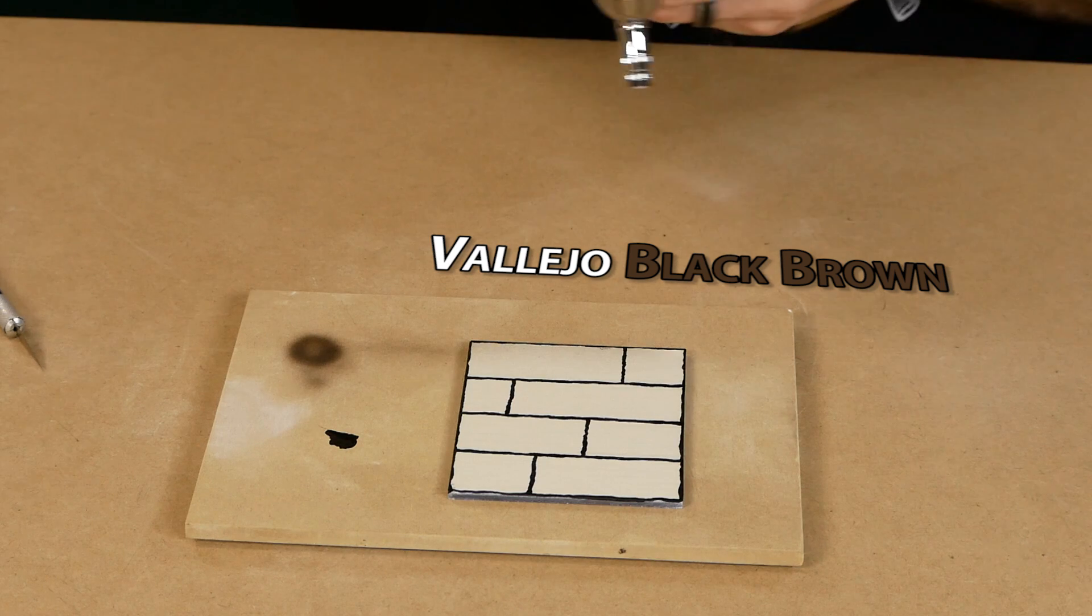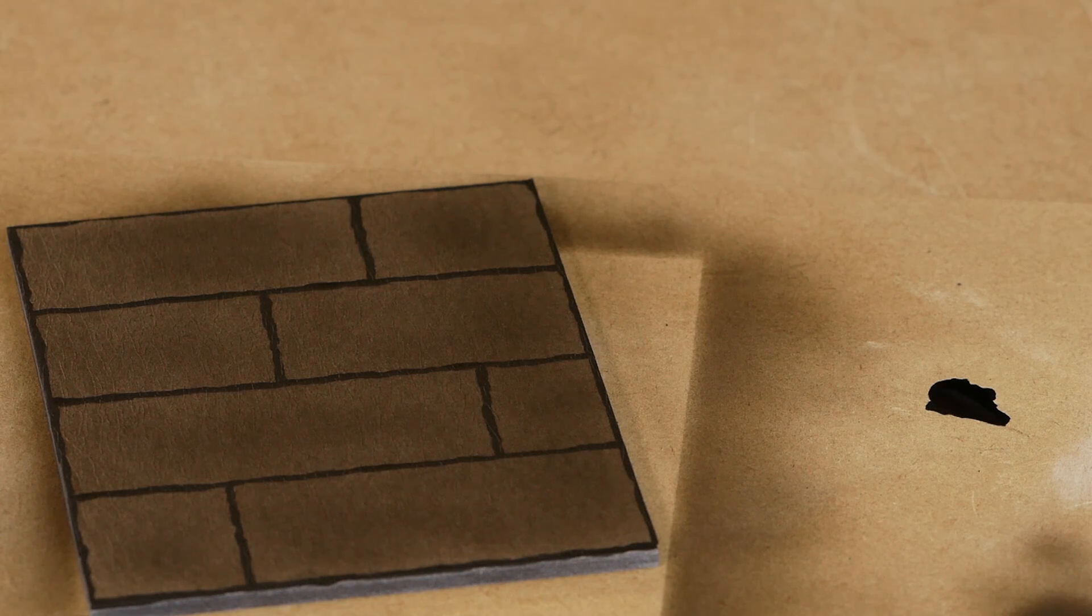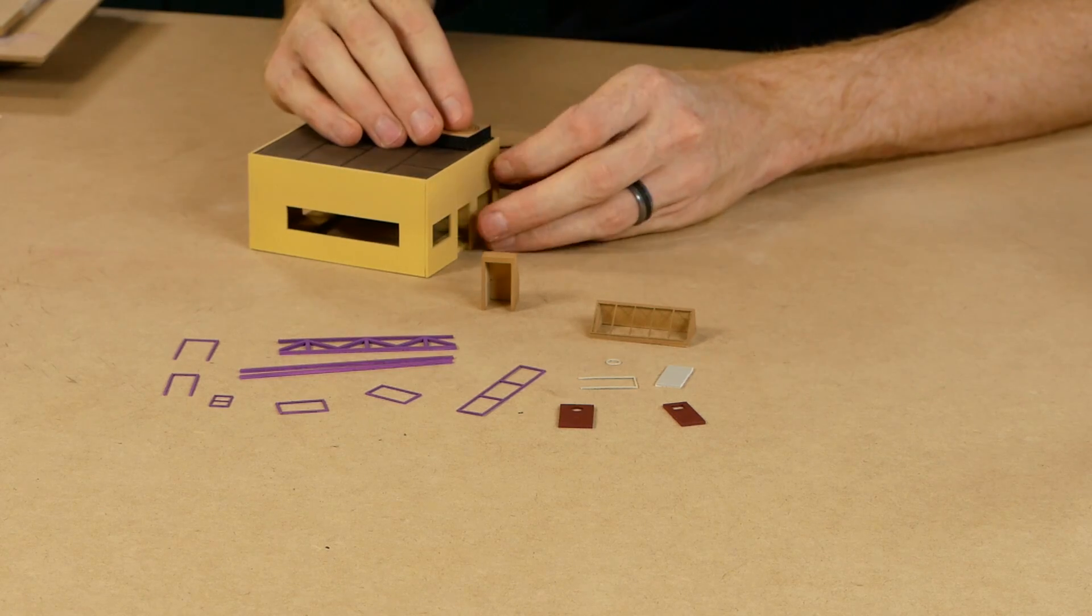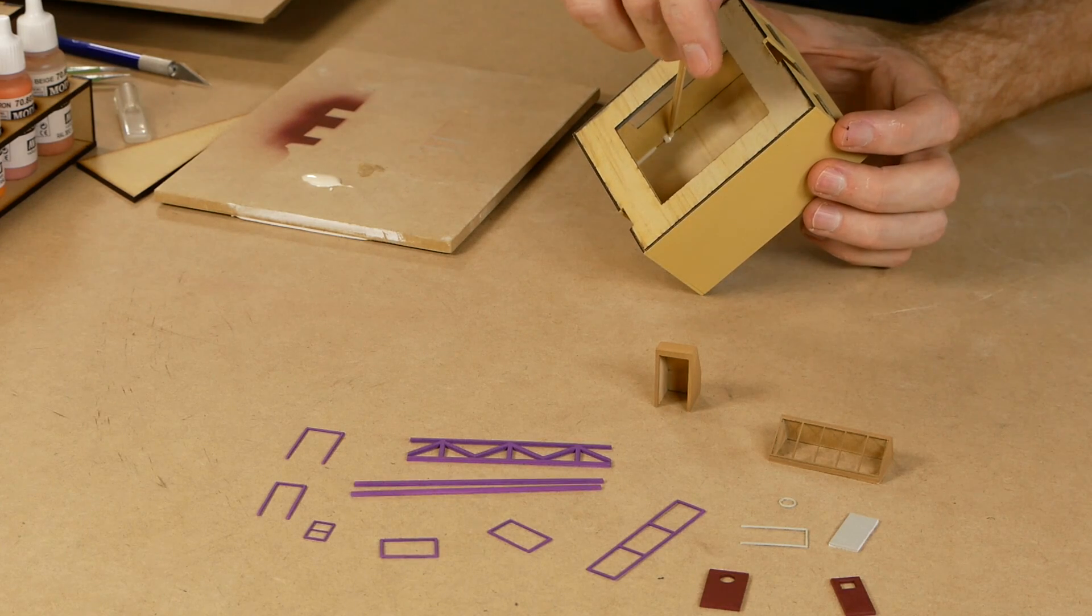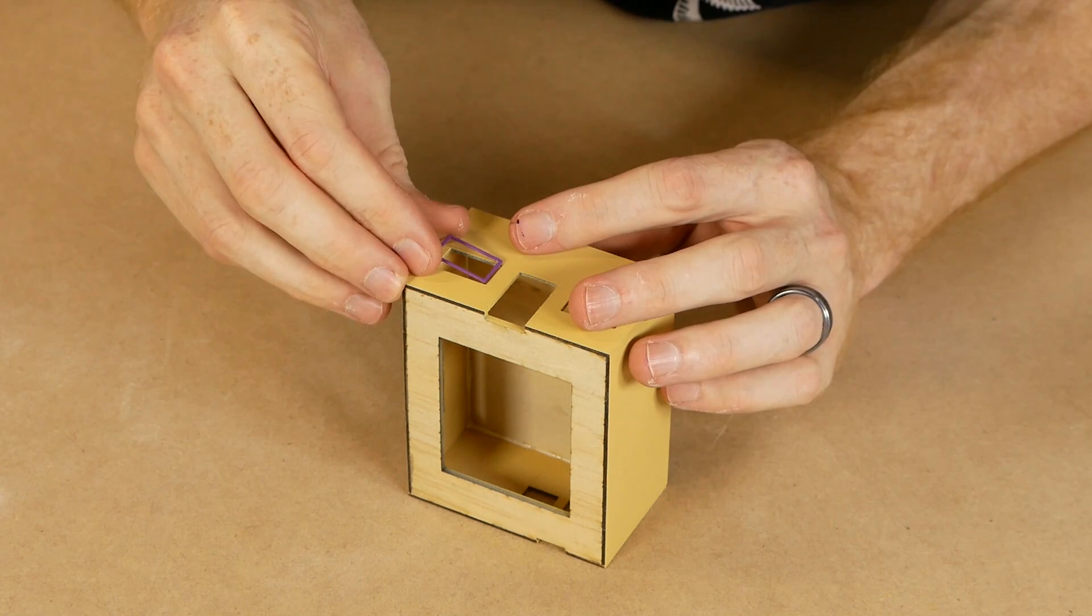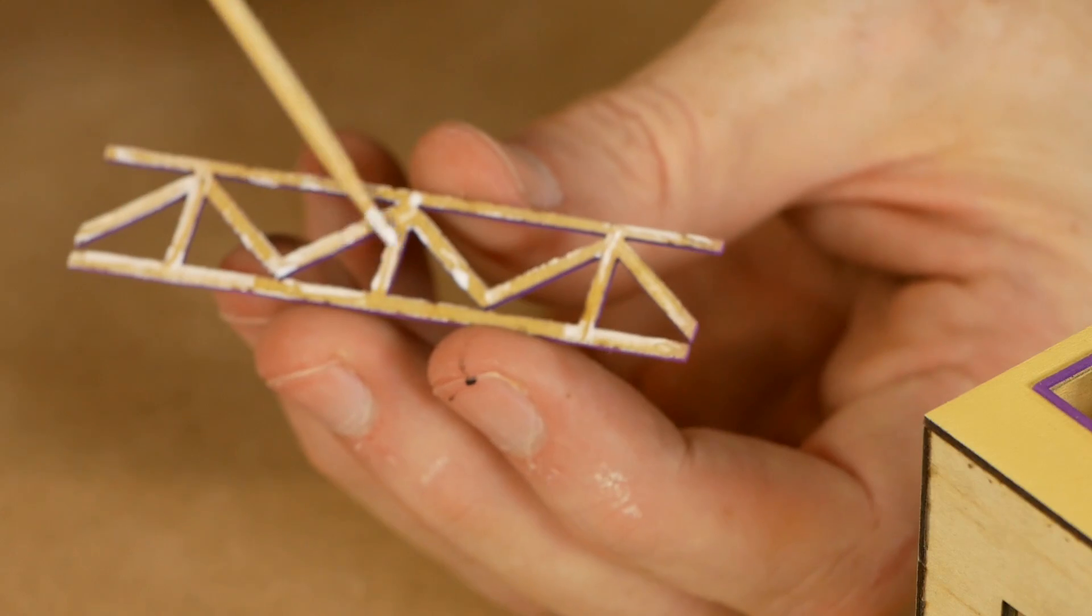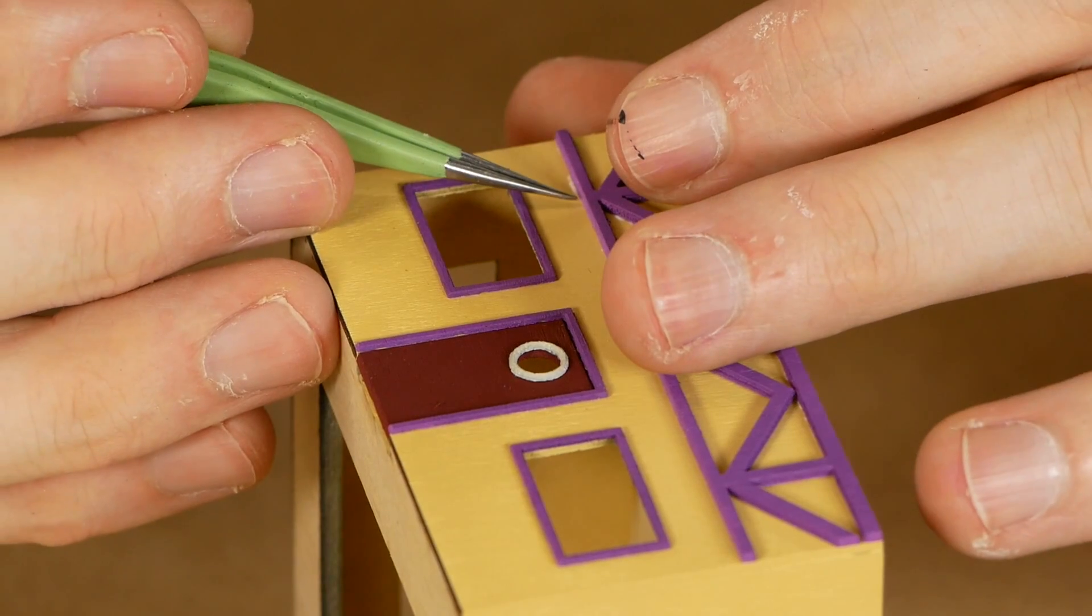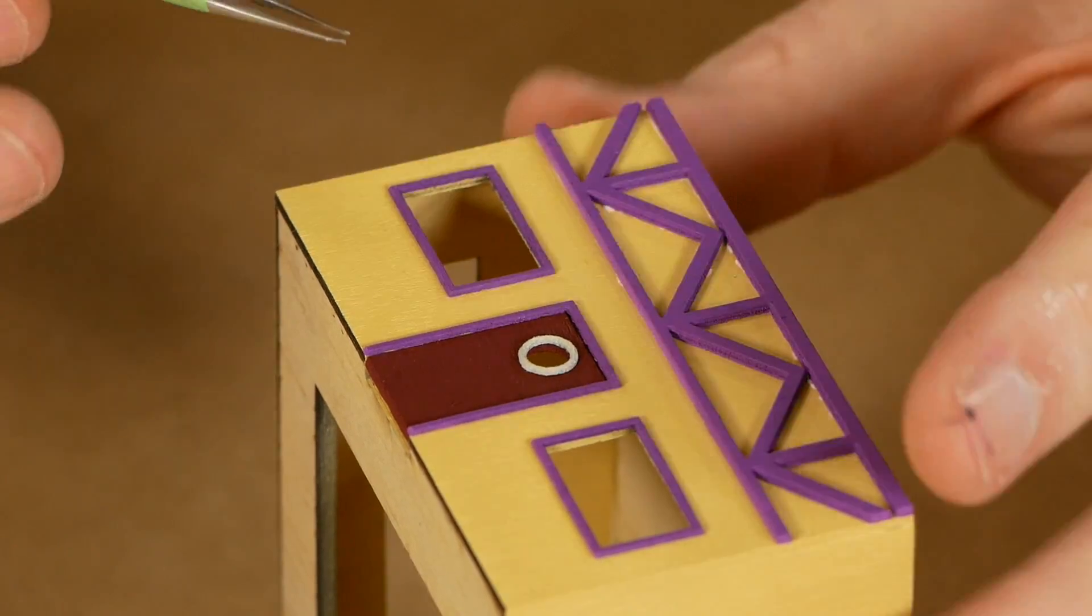Now that everything's painted I can start gluing it together. The roof is pressed down and I used a three millimeter thick piece of MDF as a guide for depth and glue is applied from underneath. Once it's in position it's pretty straightforward, just take your time and try to be as accurate as you can. It's inevitable that some glue will ooze from the joins so don't forget to wipe away the excess.